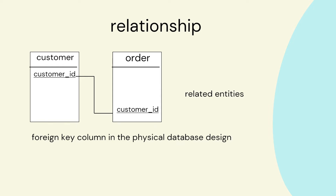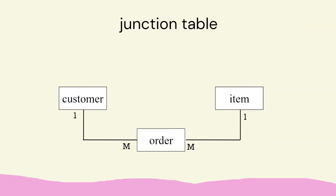In this diagram, the customer and order are entities, and we have a relationship between the two. The customer ID is the primary key in the customer table and the foreign key in the order table. To relate the customer and the items they purchase, we have a junction table — in this case, the order table. Many customers order many items, so the order table includes the customer ID and an item ID to know which item is being purchased.